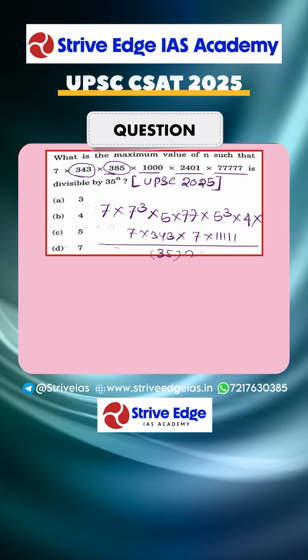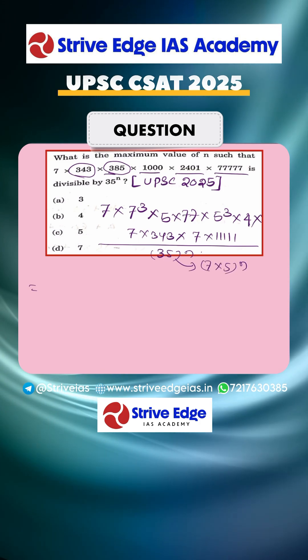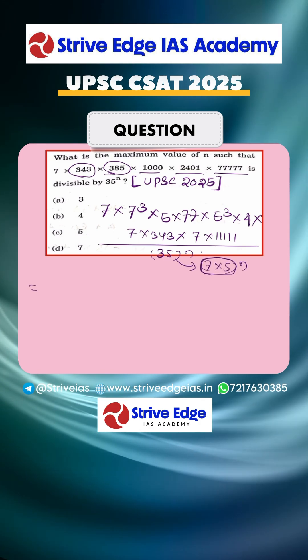Here I know that 35 equals 7 × 5 to the power n, so we have to find the pairs of 5 × 7.